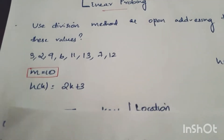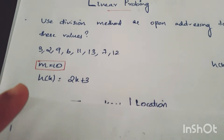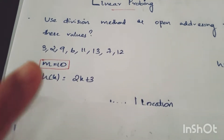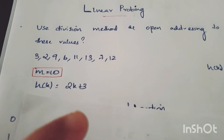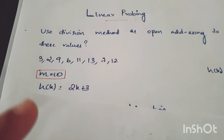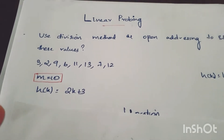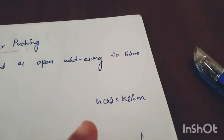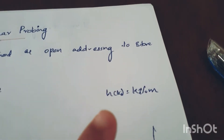We have keys, and the hashtable size M is equal to 10. The hash function H is equal to 2k plus 3. This is one equation. By this equation, we have the Division Method in this formula: H is equal to k mod m. Let's apply it.